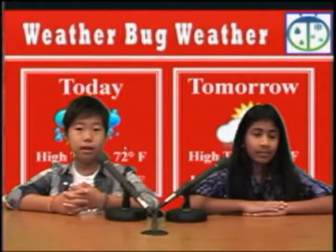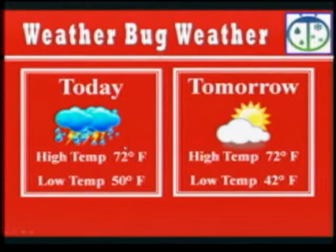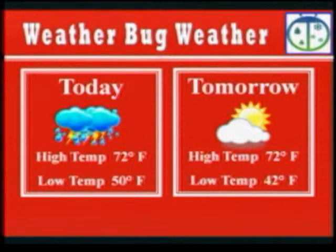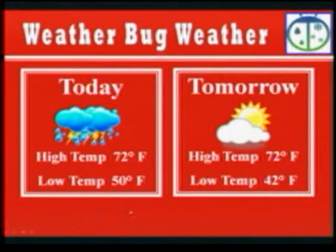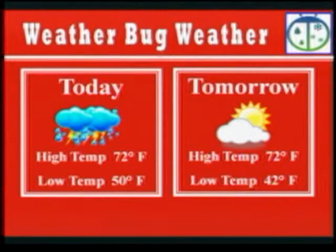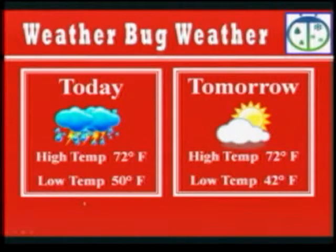And now for your up-to-the-minute weather. Today is expected to be rainy with a thunderstorm. The current temperature is a muggy 70 degrees Fahrenheit. The high is expected to be 72 degrees Fahrenheit. The low this evening will be 50 degrees Fahrenheit. Tomorrow is expected to be mostly sunny. There will be indoor recess today.